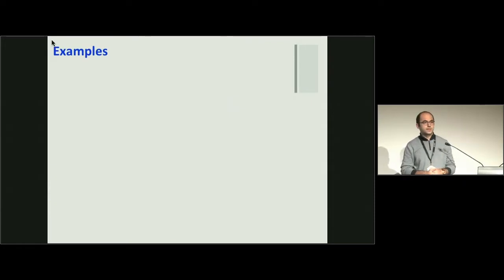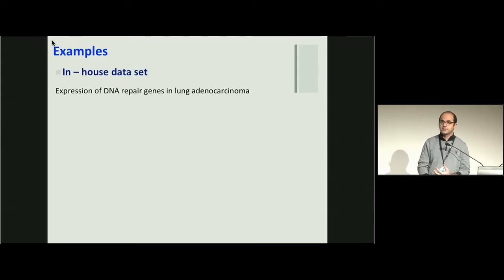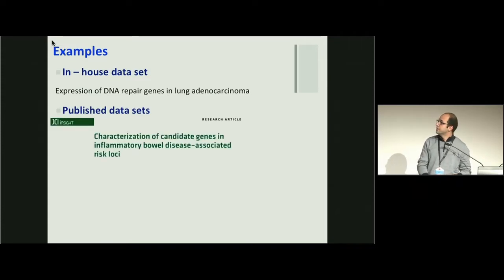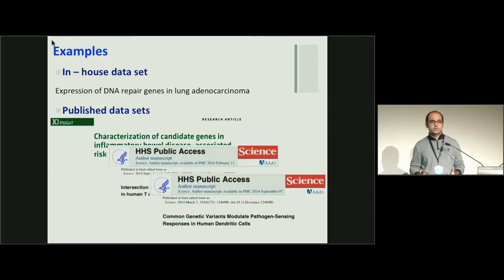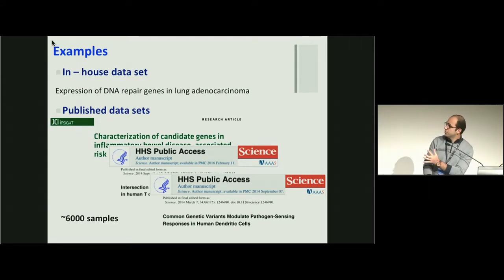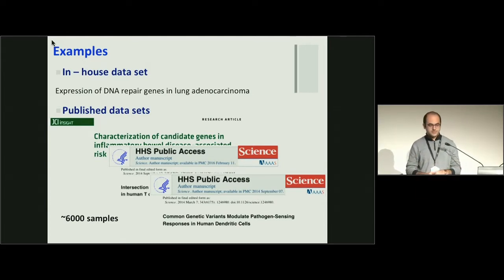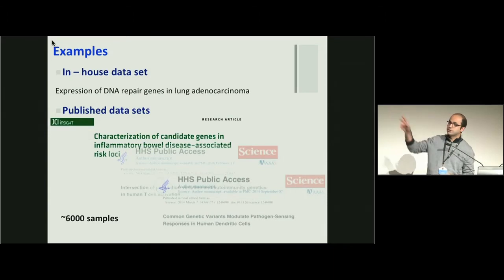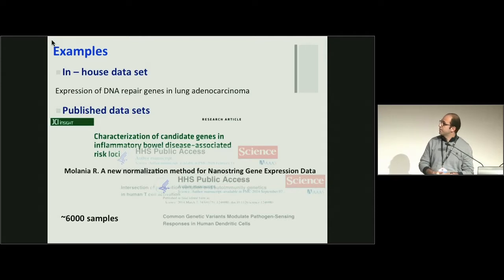To assess the performance of NanoString normalization, I looked at different datasets. The first is an in-house dataset with DNA repair gene expression. I also looked at different published datasets - a paper published in 2016 and two other Science papers published in 2014. In total, we assessed 6,000 samples. For the sake of time, I'm just going to take you through two examples. If you want to know what happened with the other papers, you can look at our paper which will be available on bioRxiv in the next few days.